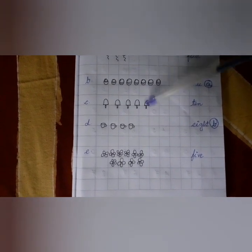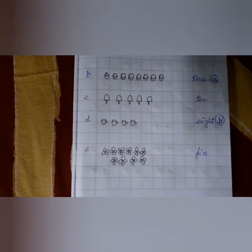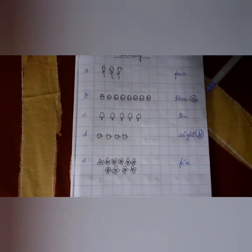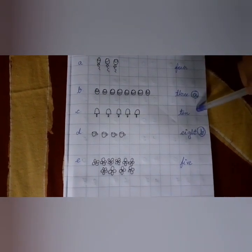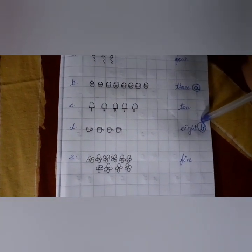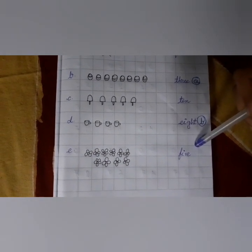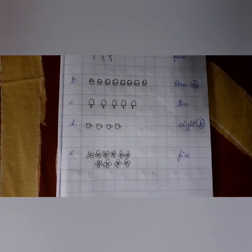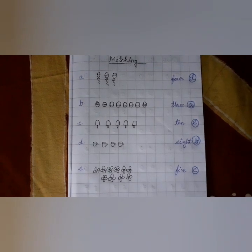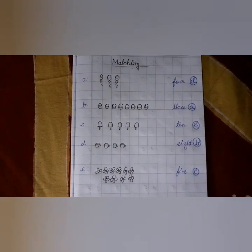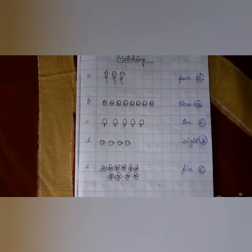Next, count the ice creams: 1, 2, 3, 4, 5 — five ice creams. The spelling is F-I-V-E, so you write C here. This is the final answer — match it with your own homework.